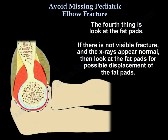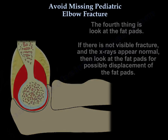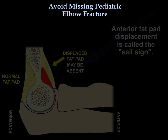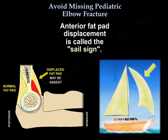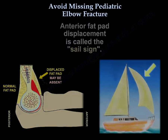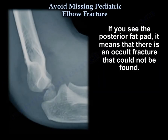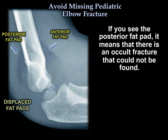Look at the fat pads. If there is no visible fracture and the x-rays appear normal, look at the fat pads. The anterior fat pad displacement is called the sail sign. If you see the posterior fat pad, it means there is an occult fracture that we cannot find.